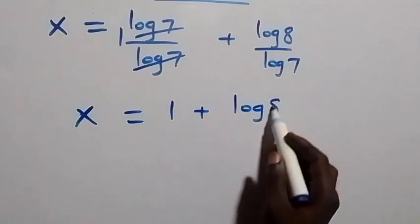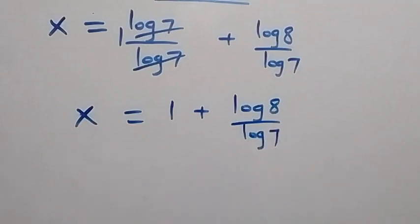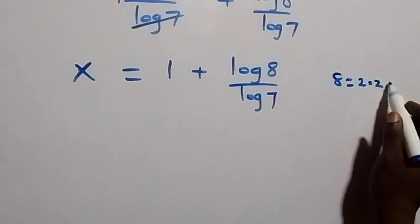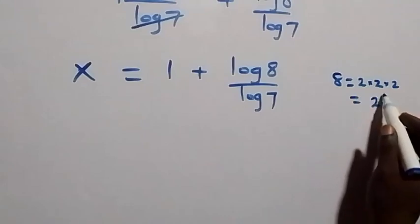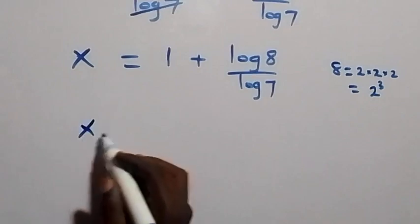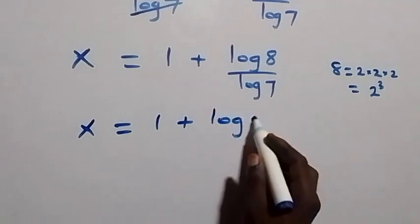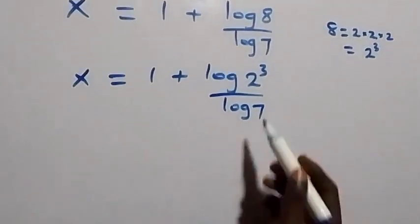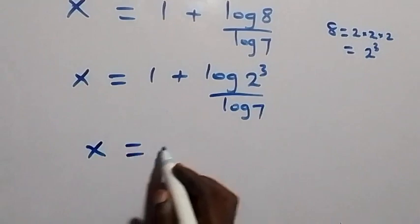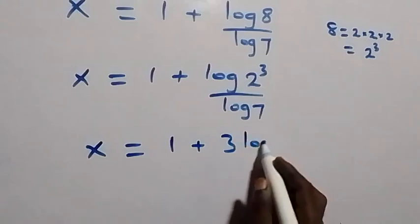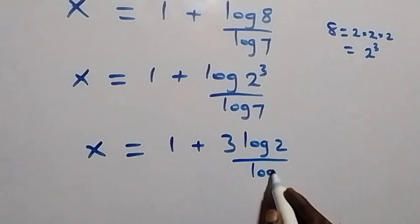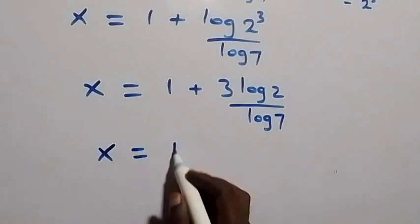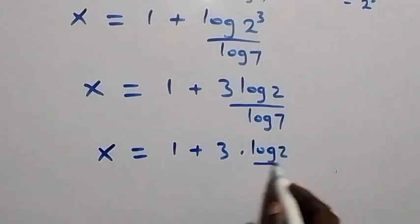Now, 8 equals 2 times 2 times 2, which is 2 raised to the power 3. So x equals 1 plus log(2 raised to power 3) over log 7. Applying the power law again, the 3 comes out front, giving x equals 1 plus 3·log 2 over log 7.